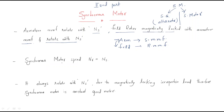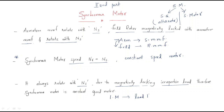Next, the synchronous motor speed is Nr equal to Ns. This is a very important point. The motor which has constant speed - this is called a constant speed motor. The speed of the motor is fixed and constant. It always rotates with the synchronous speed due to magnetic locking, irrespective of the load. In case of an induction motor, when load increases, the rotor speed decreases. But in the synchronous motor, any change in load - the speed is constant, there is no change in speed.